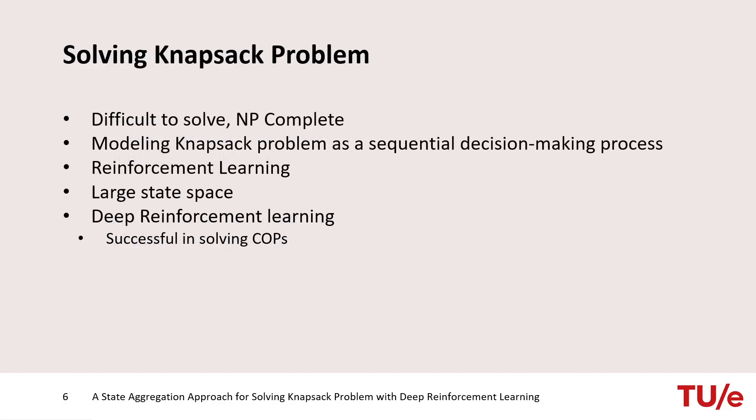Since this problem is hard to solve and it can be modeled as a sequential decision-making problem, we opted for deep reinforcement learning to solve it. This method has been very successful in solving combinatorial optimization problems during the last few years.